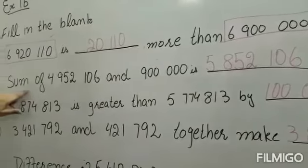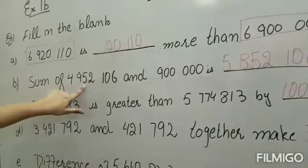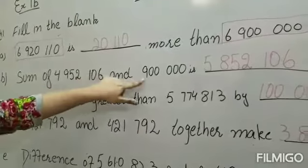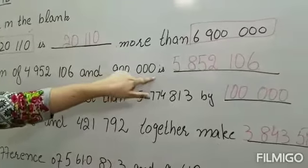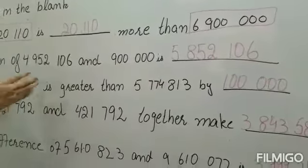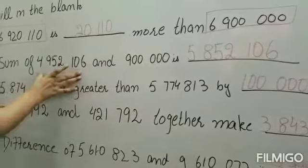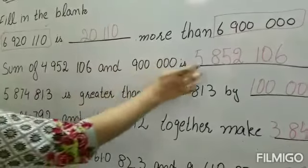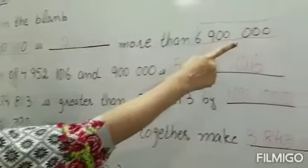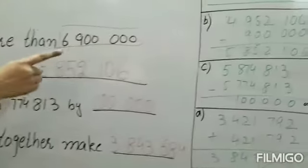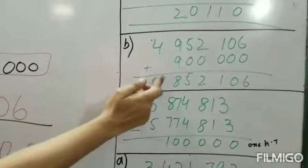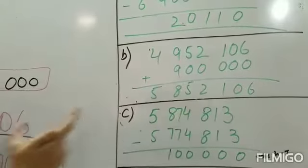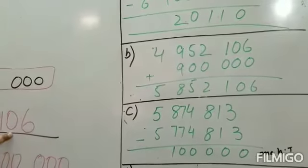Second blank: sum of 4952106 and 900000 is. देखें कि आपके पास दो numbers हैं, आपको इन दोनों numbers को sum करना है जिससे आपका answer आए। मैंने sum आपको plus किया, आपका answer आता है 5852106, जिसे मैंने अपनी blank में put कर दिया।